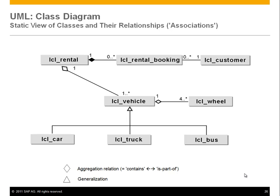The customer lives independently of the booking or the rental, as does the vehicle — this is the strong coupling of lifetime with the filled diamond. If you look at rental and vehicle, the rental has an open diamond, meaning the vehicle is part of a rental, but if you delete the rental the vehicle is not deleted. The car can still be in the lot for another rental — the lifetime is independent. The open diamond is more a semantic hint that objects should be considered together versus objects that live completely independently.